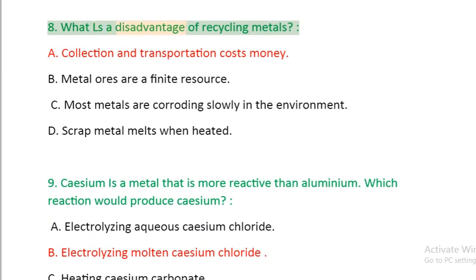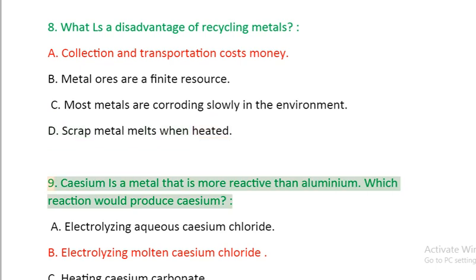Question 8: What is a disadvantage of recycling metals? A. Collection and transportation costs money, B. Metal ores are a finite resource, C. Most metals are corroding slowly in the environment, D. Scrap metal melts when heated.